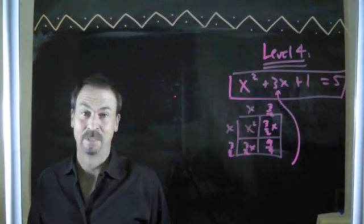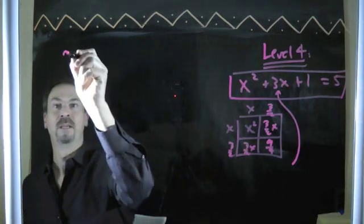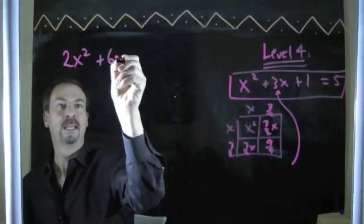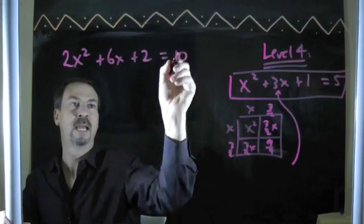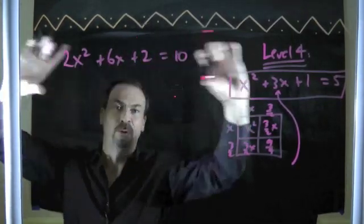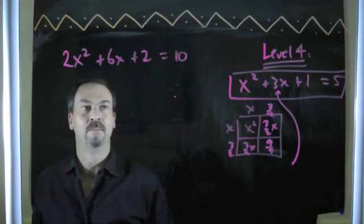What's a way of changing this problem so I won't have an odd number in the middle? Well, most people say, just double the problem. Okay, we'll do that. 2x squared plus 6x plus 2 is 10. If I'm going to double the middle, I better double throughout and multiply the whole thing through by 2. Beautiful!